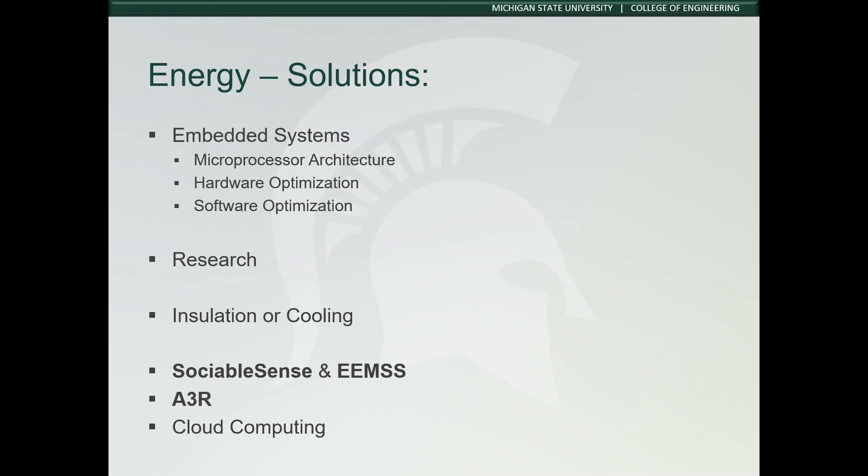Research surveys on the energy efficiency solutions for mobile handsets in literature from 1999 to May 2011 were categorized into six groups: energy-aware operating systems, energy measurements, power models, users' interactions and computing resources, wireless interfaces and protocol optimizations, sensors, optimizations, and computing offloading.